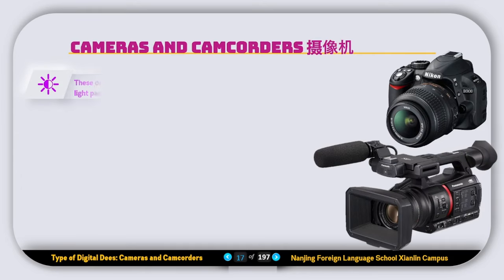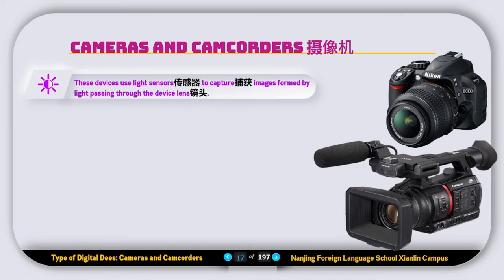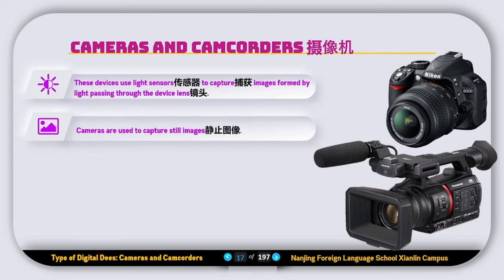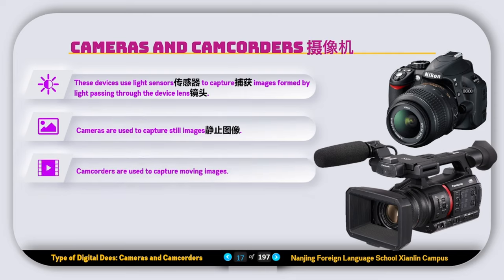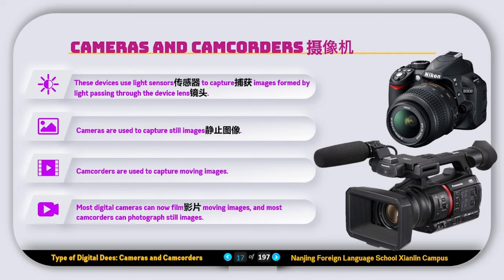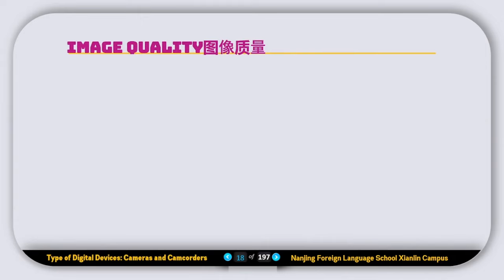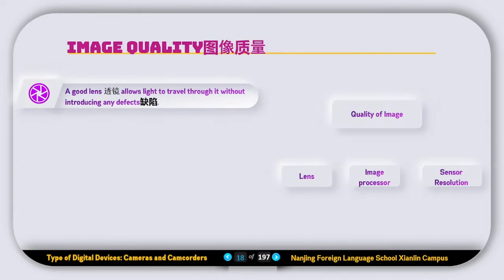Now let's talk about cameras and camcorders. These devices use light sensors to capture images formed by light passing through the device's lens. Cameras are used to capture still images, while camcorders are used to capture moving images. Most digital cameras nowadays can also film moving images, and most camcorders can also photograph still images.